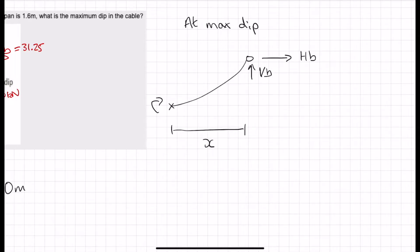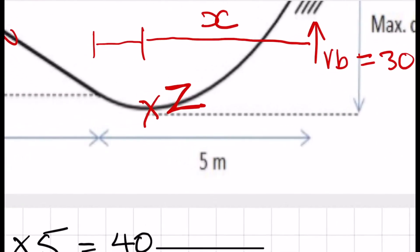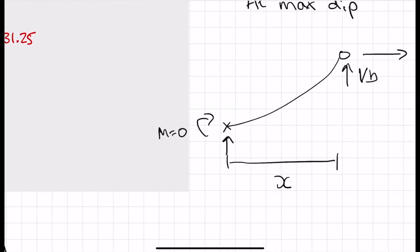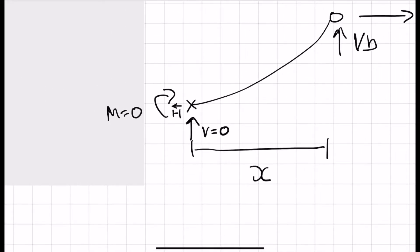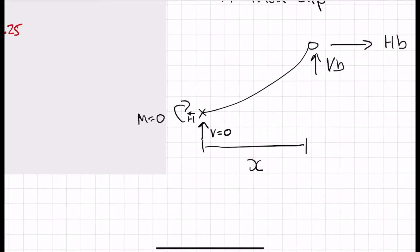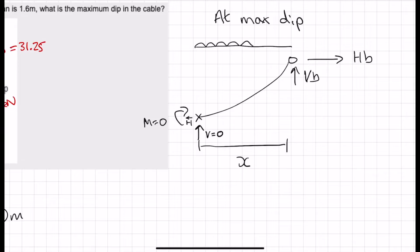So then at the maximum dip, what do we have? We've got HB, VB, we've got some unknown value there of X. We're also making use of the fact that moment is equal to zero. But the key thing for cables, parabolic structures generally, but cables more than anything else, is at the maximum dip, you should be able to tell that the tangent at that dip is completely horizontal. Because it's horizontal, therefore there's no vertical force, if I take a free body diagram. There is some horizontal force, but the vertical force, here is the assertion. I am asserting that vertical is zero at that point. And that's actually the key to solving this question.